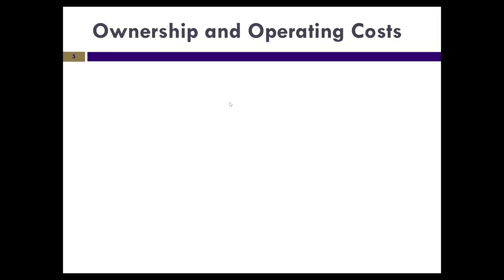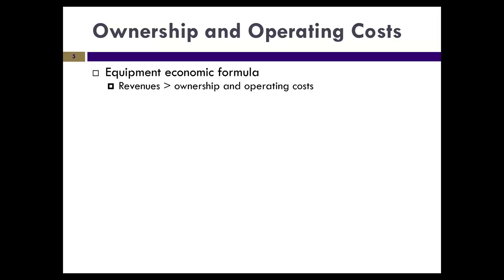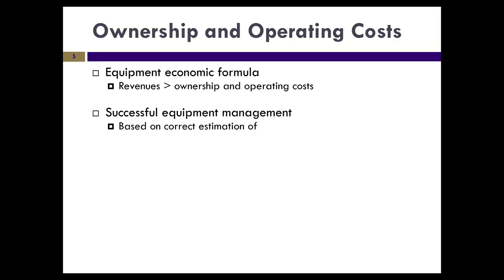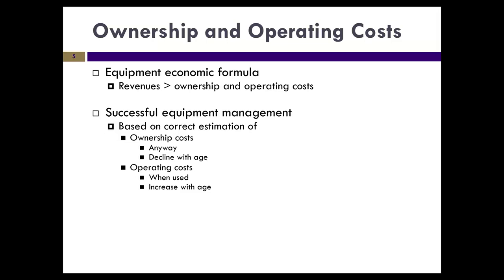We have all of these ownership and operating costs, and there are many ways of handling them. We're going to address the most frequently used one: the present value method, using economic formulas. We need to make sure that the revenue we receive for the vehicle is greater than the ownership and operating costs, or else we're losing money every hour for every vehicle. Successful equipment management is critical to construction: it's based on a correct estimate of ownership costs, understanding that those ownership costs decline with age, while operating costs—which only occur when things are used—increase with age.